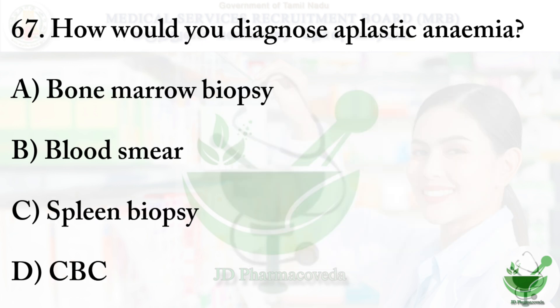Question number 67: how would you diagnose aplastic anemia? Aplastic anemia is a rare condition in which the body stops producing enough new blood cells — specifically in the bone marrow. When bone marrow gets damaged and new cells are not produced, that condition is called aplastic anemia. Diagnostic methods: option A: bone marrow biopsy. Option B: blood smear. Option C: spleen biopsy. Option D: CBC. The right option is option A, bone marrow biopsy, and option B, blood smear.